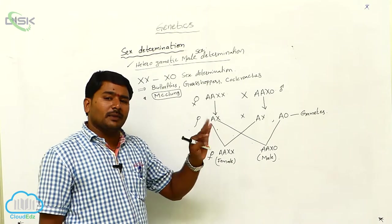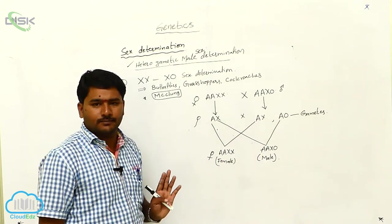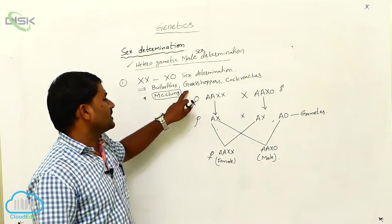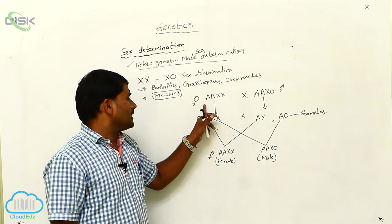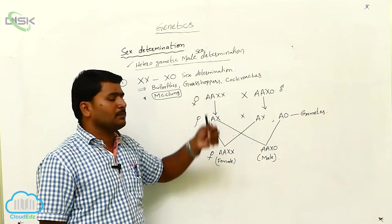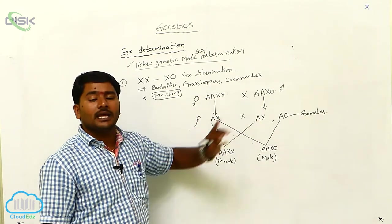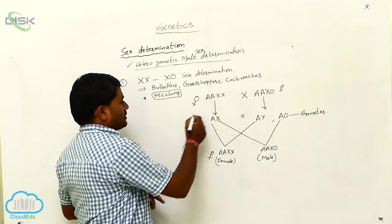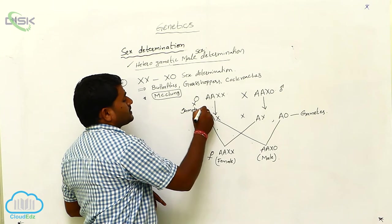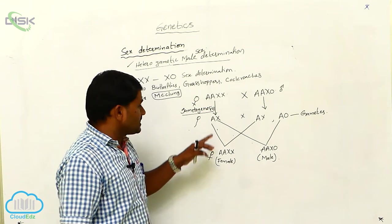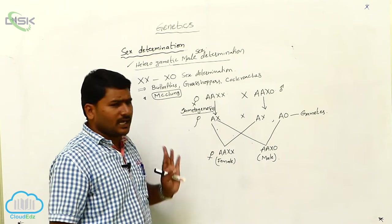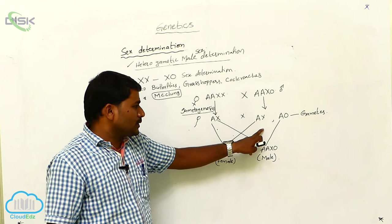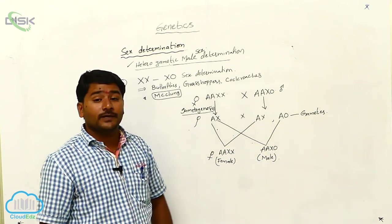In heterogametic male sex determination, the male is the heterogametic individual and the female is the homogametic individual. This type is seen in butterflies, grasshoppers, and cockroaches. The female karyotype is AAXX and the male karyotype is AAX0 — the Y chromosome is absent. During gametogenesis, the female produces only AX type ova, which is why it is called homogametic. The male produces two different types of gametes because it has differences in the sex chromosomes.